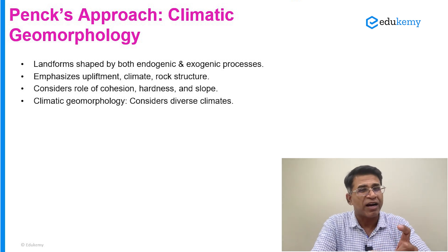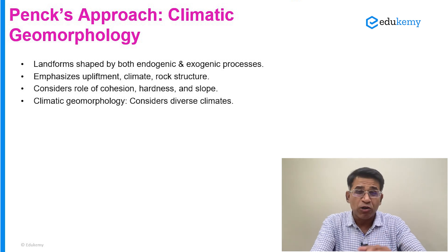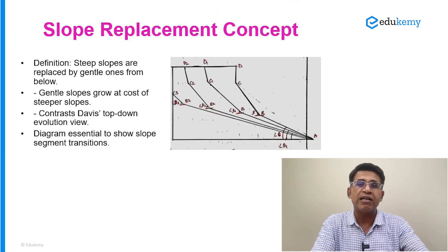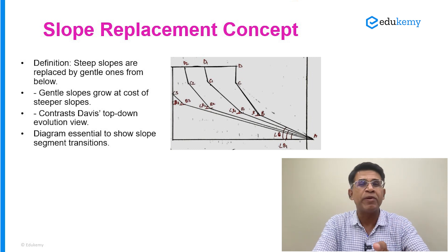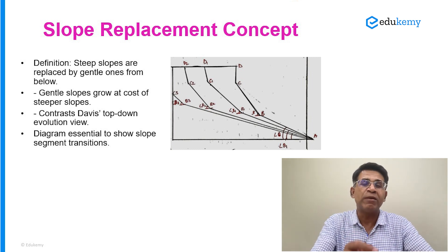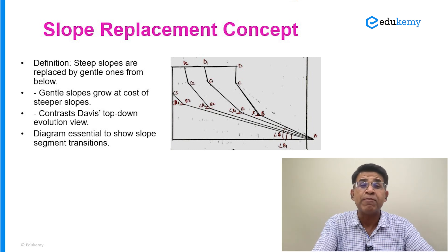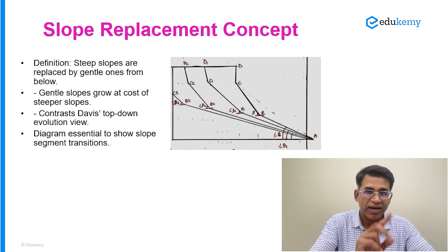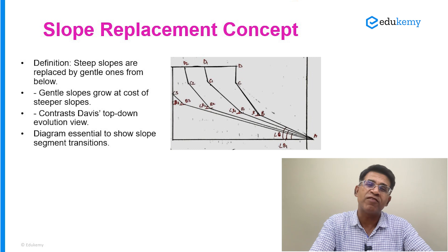This much content you must write whenever you start with Peng's model. Then you discuss what Peng tells us about the slope replacement model. Start with the definition: slope replacement is a model where steeper slopes are replaced by gentle slopes, and the replacement happens from below. The gentle slopes grow at the cost of the steeper slopes.